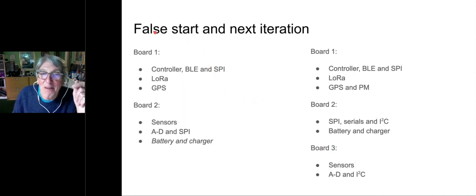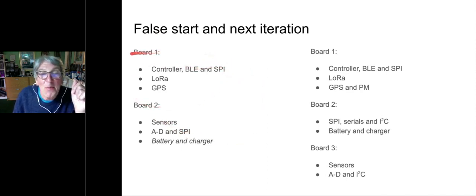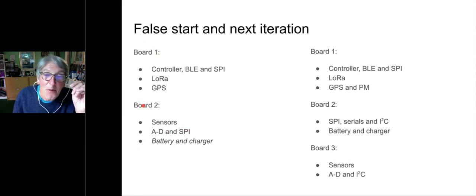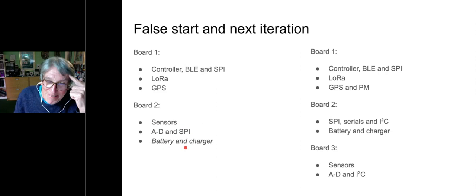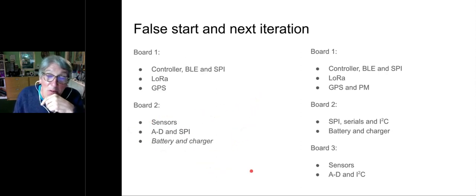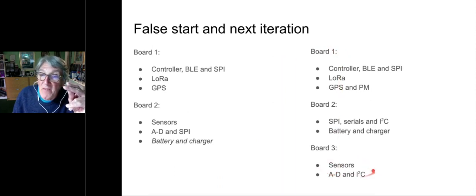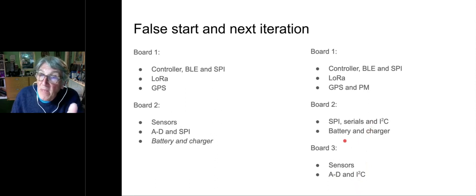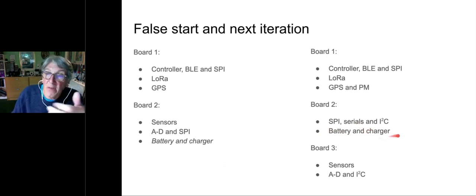That was a false start, and this is a bit embarrassing — we put the battery and charger circuit on the same board as the sensors and the ADC, and that turned out to be an unmitigated disaster. In the latest iteration, the sensors and ADC are on a completely separate board with only an I2C interface to the main system, and the battery, charger, and extra serial connections are on a separate board. Just by having that board separate, we cured the problem that existed on the first board set.